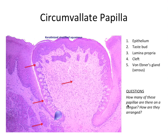A couple of quick review questions: How many circumvallate papilla are there on a tongue? Roughly about 8 to 12. And how are they arranged? In that V shape, technically anterior to the V-shaped terminal sulcus.